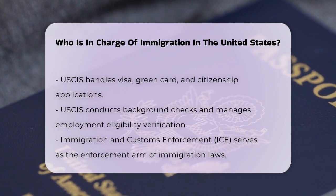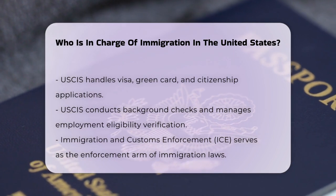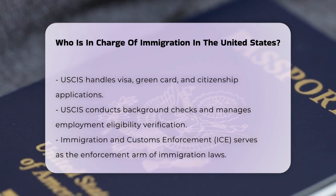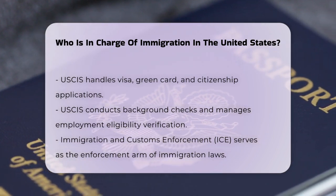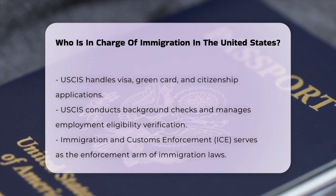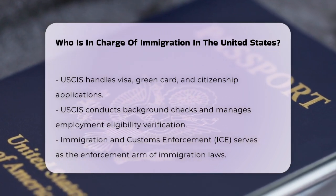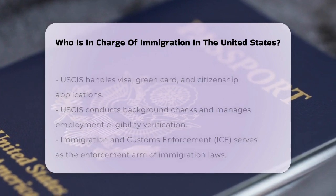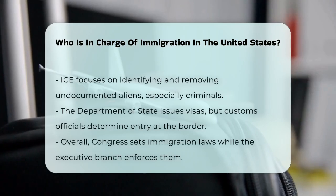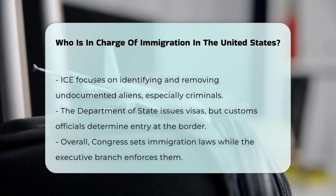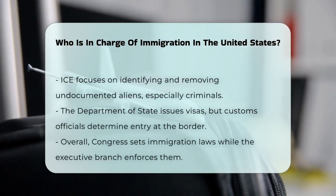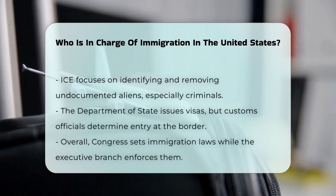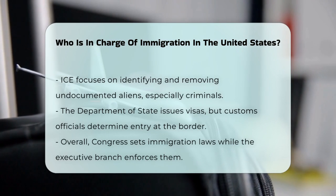ICE, on the other hand, is the enforcement arm. It identifies, detains, and removes undocumented aliens from the United States. ICE prioritizes the removal of convicted criminals and those who pose a threat to national security.